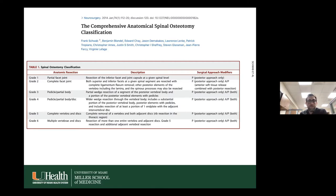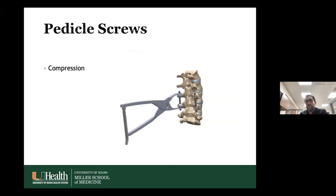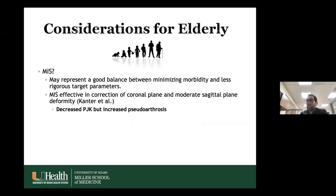Pedicle screws can be compressed to enhance lordosis, but you must be careful with patients with poor bone quality as this can damage screw integrity. When placing someone on a Jackson table, a passive amount of lordosis is produced — and that may be enough. For the elderly, MIS is a good option. A systematic review of 40 articles found MIS is effective for correction of coronal and moderate sagittal plane deformity in the elderly, with decreased incidence of PJK compared to open surgery but an increased risk of pseudoarthrosis.